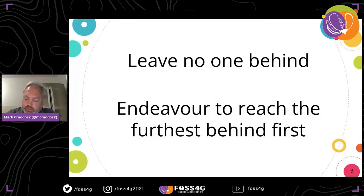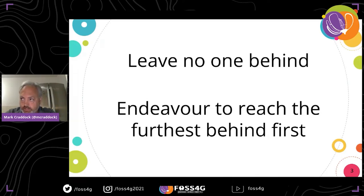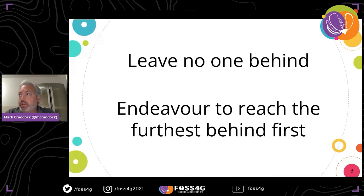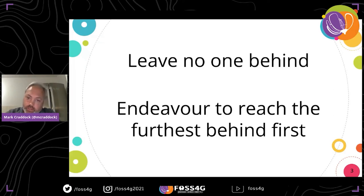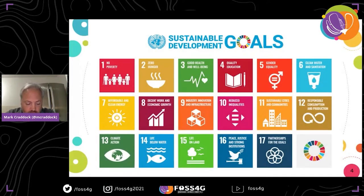There are two key principles from the UN: to leave no one behind. We had to ensure that whatever we did, any country — at any level of capability, skills, funding, or technology — was able to use the platform. We also endeavored to reach the furthest behind first, to bring everybody up to the same level. And as part of the global platform, it was to support the sustainable development goals.